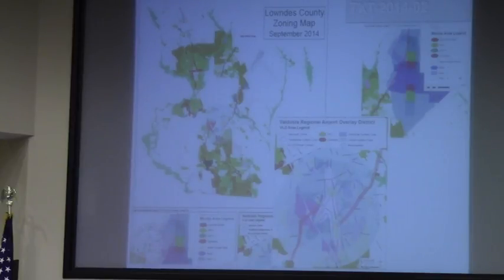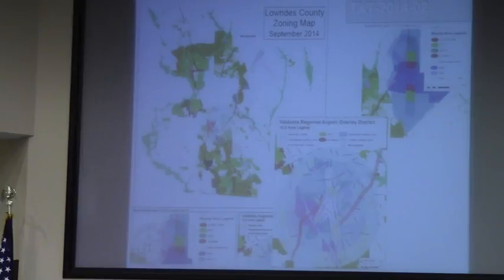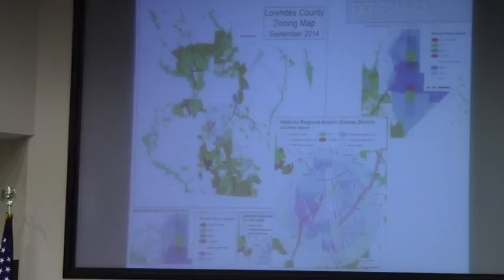That map did have two additions to the legend that you'll see in the Valdosta Regional Airport Overlay District, known as the Horizontal Surface Zone and the Conical Surface Zone. That just wasn't depicted on there — it should have been; it was an addition to the legend. The case and the map also reflects the property that was approved for rezoning down in Lake Park in a previous month. Those are the changes that I expected to see, and I have those.